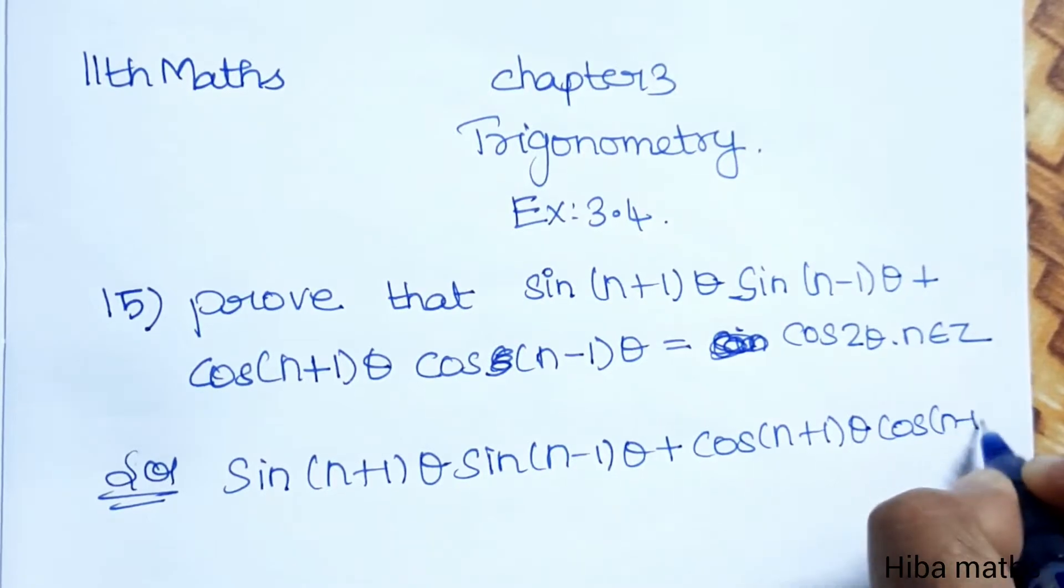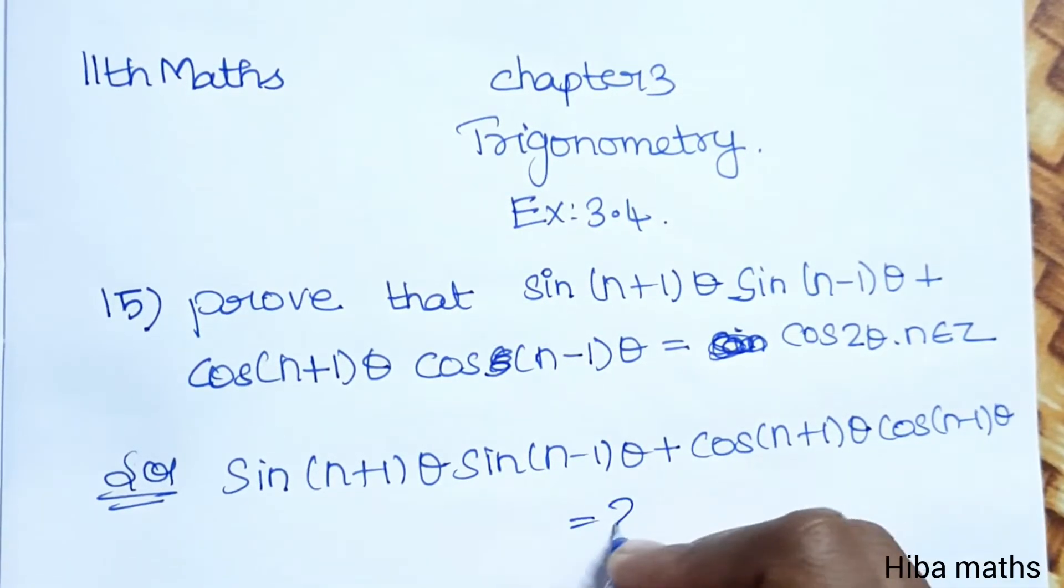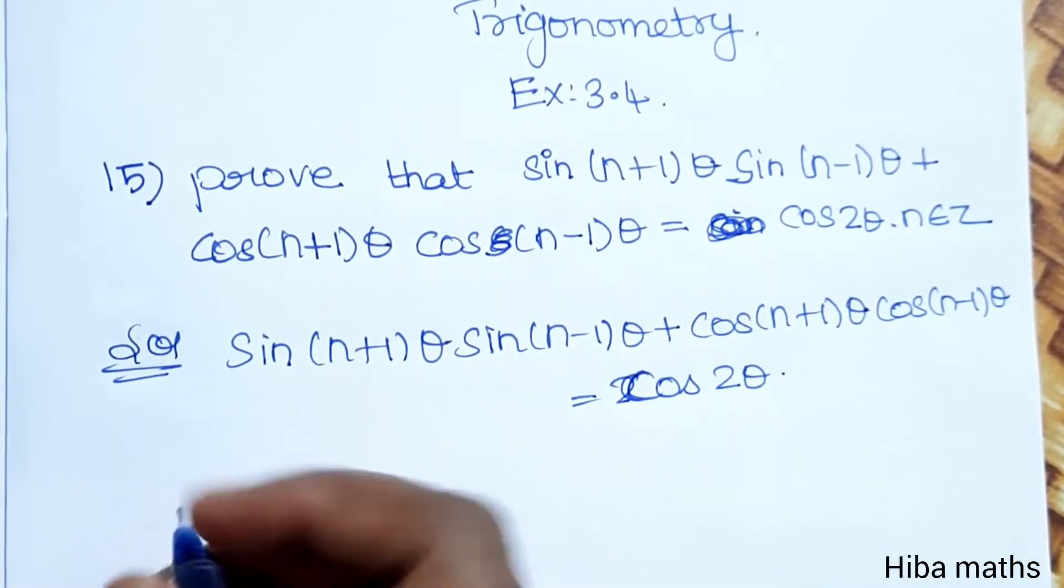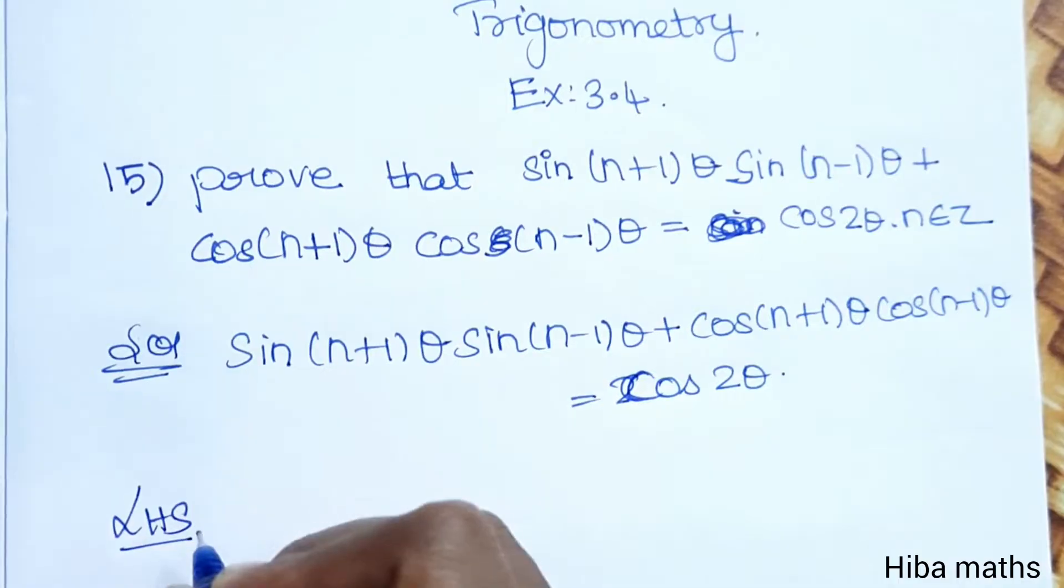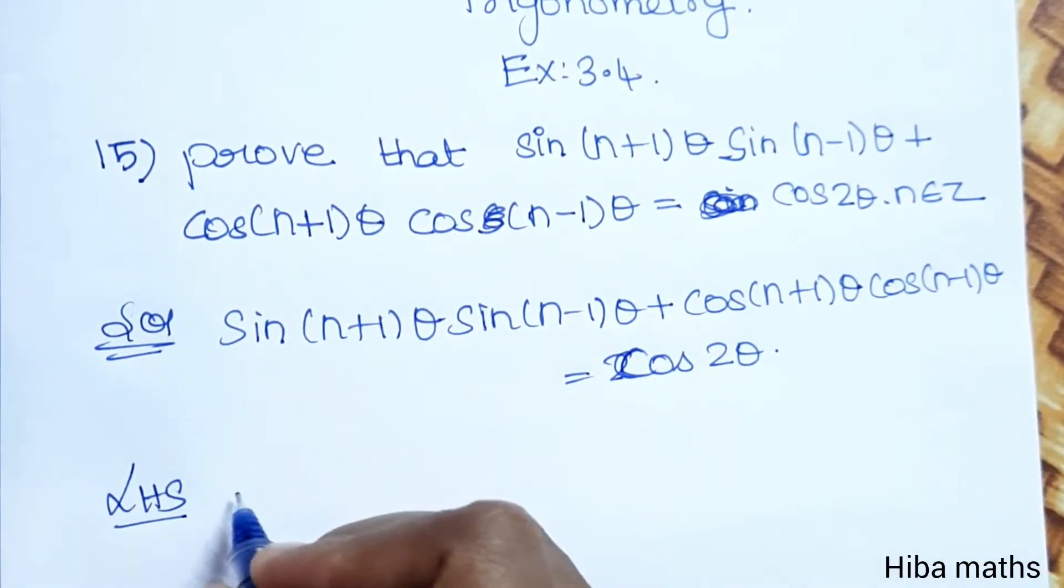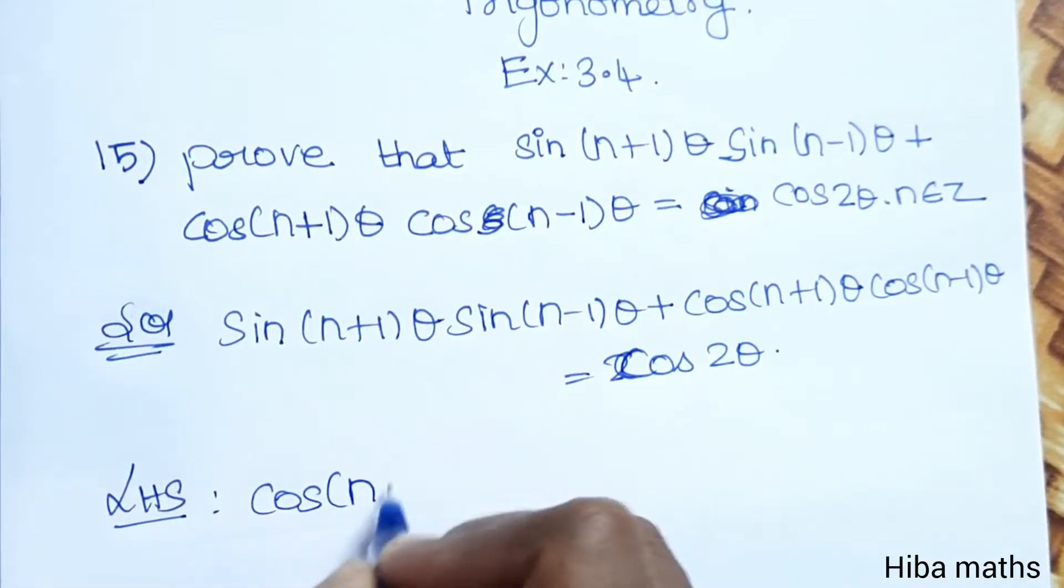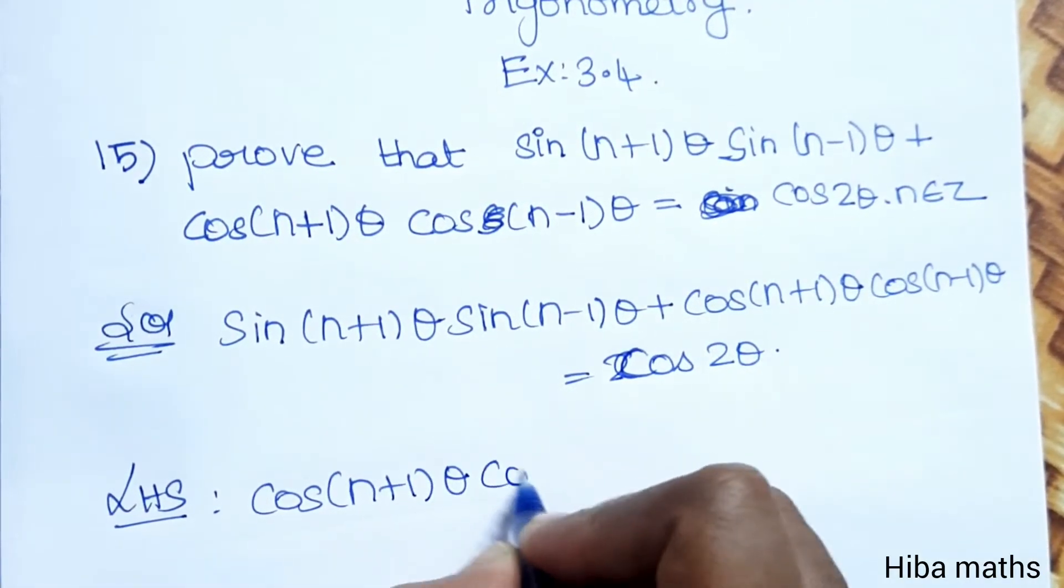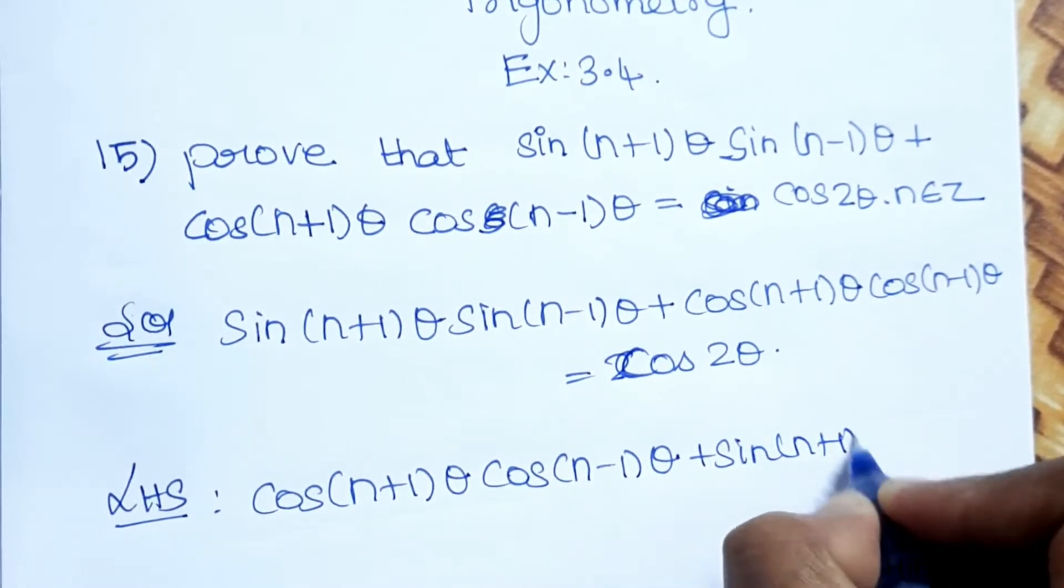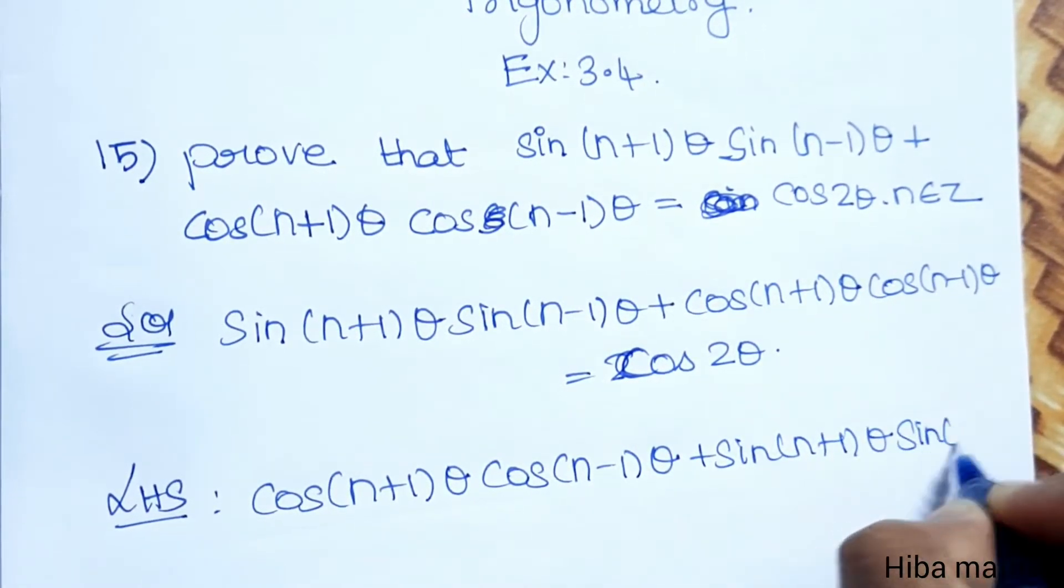cos(n-1)θ equals cos 2θ. Now taking the LHS, we can rewrite this as cos(n+1)θ cos(n-1)θ plus sin(n+1)θ sin(n-1)θ